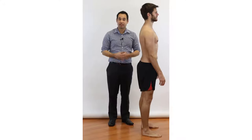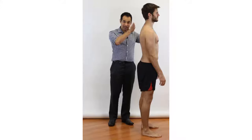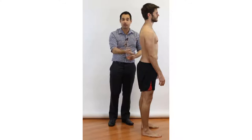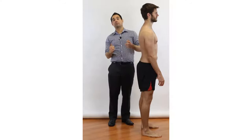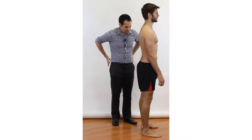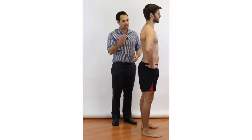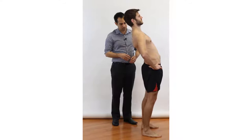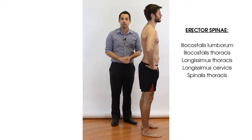Now we're going to look at active lumbar spine extension. Again, our patient will be standing. The therapist may choose to stand directly laterally to see exactly how they are extending, or directly behind to look for things like rotation. For the movement, we ask our patient to put their hands on their hips or pelvis for support, keep their knees straight, and then extend backwards. The muscles involved in lumbar spine extension are shown on the screen.